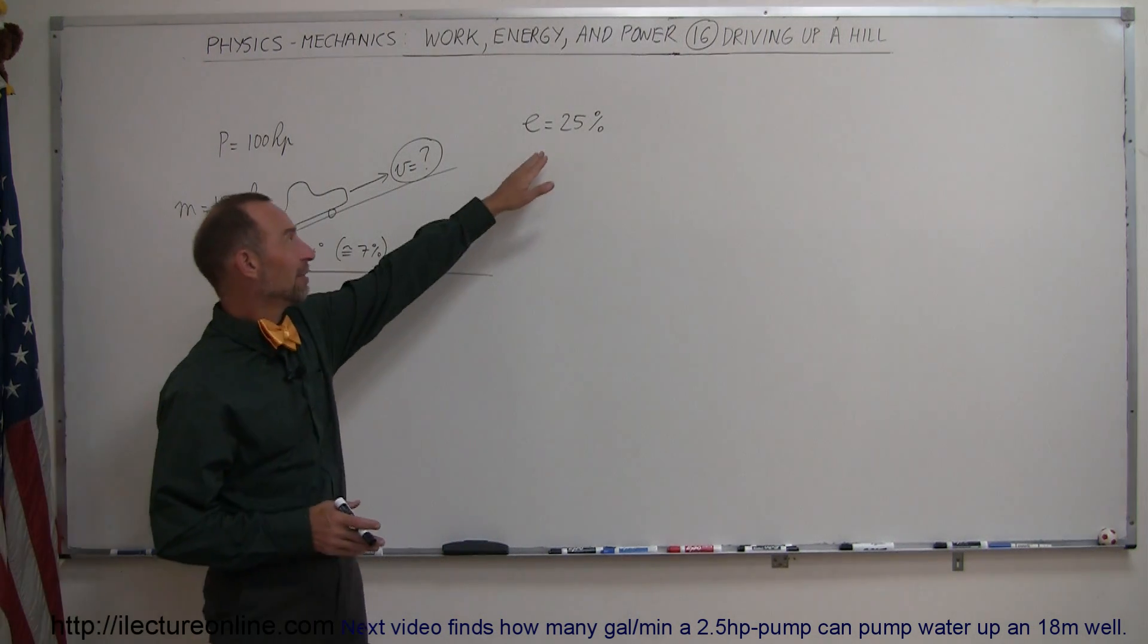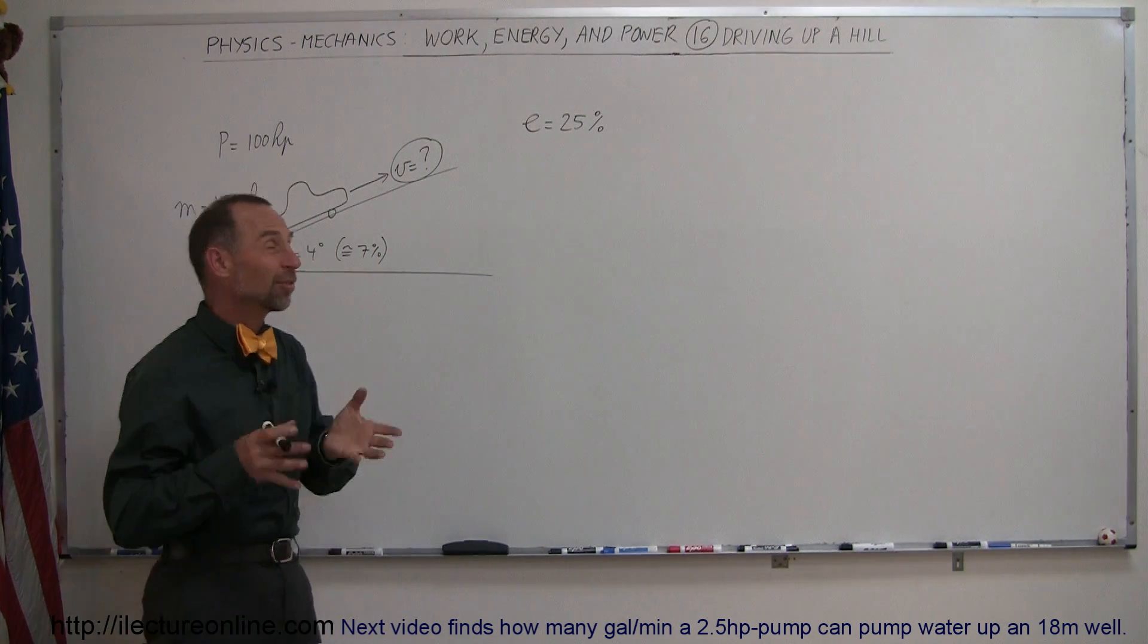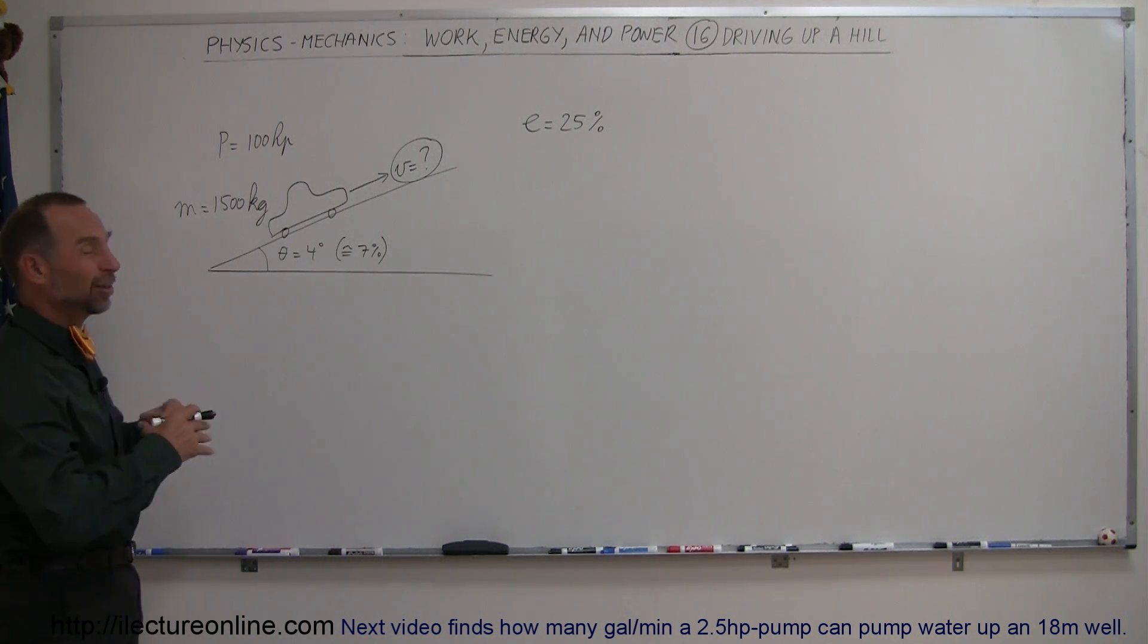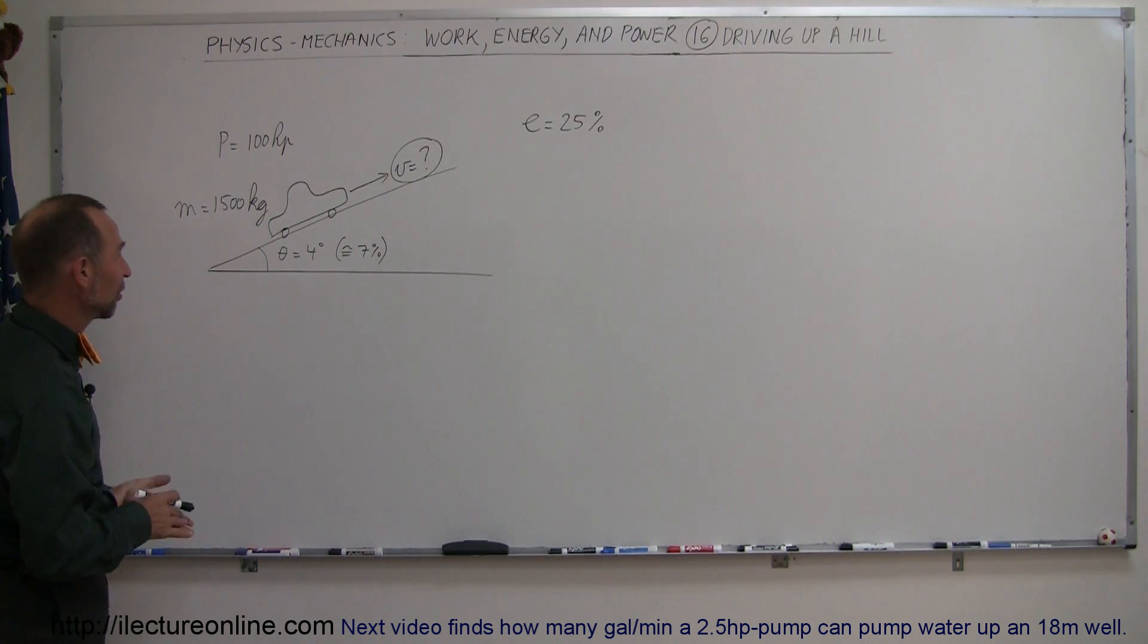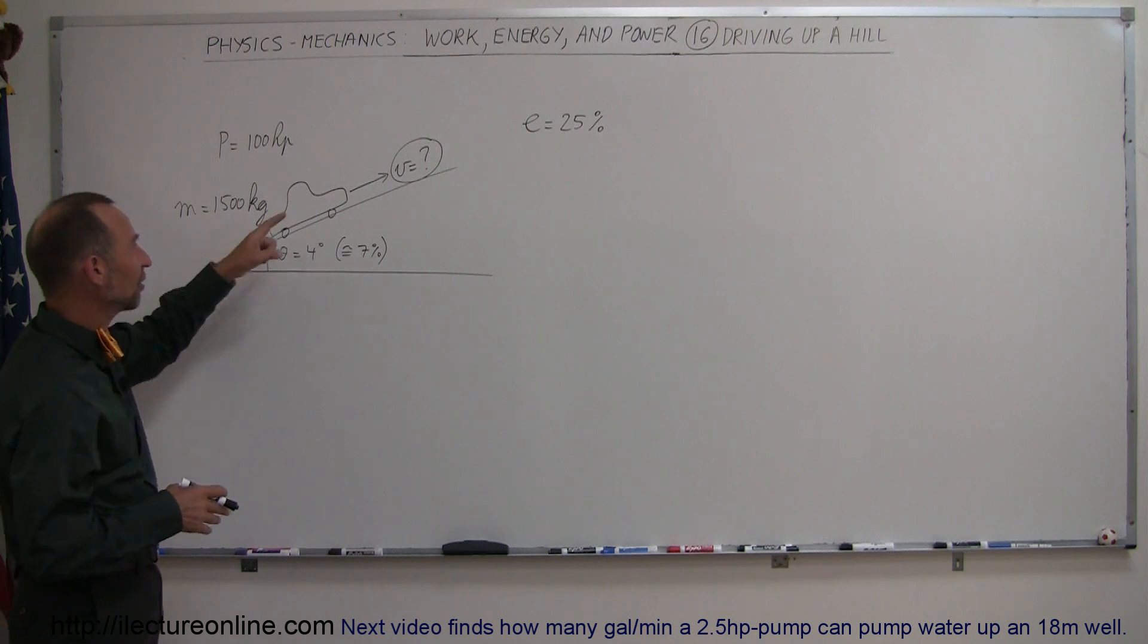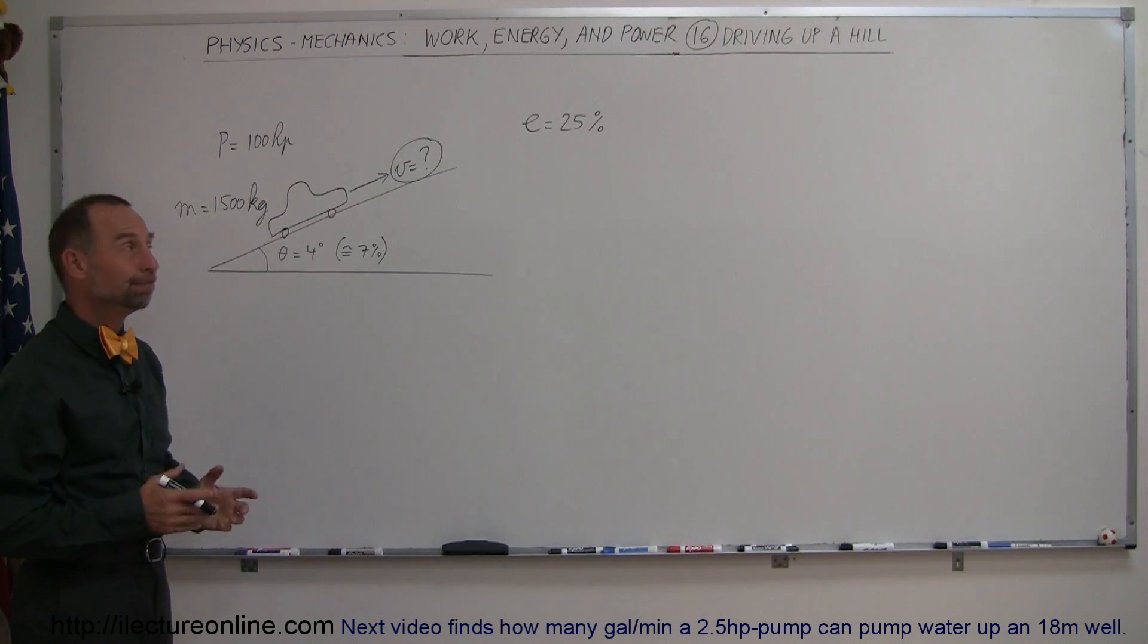The engine is about 25% efficient, meaning only 25% of that is actually used to drive up the hill. The rest is lost by wind resistance, friction, and so forth. And let's say the hill has an angle of 4 degrees, which is about 7%. How fast can this car drive up that hill?